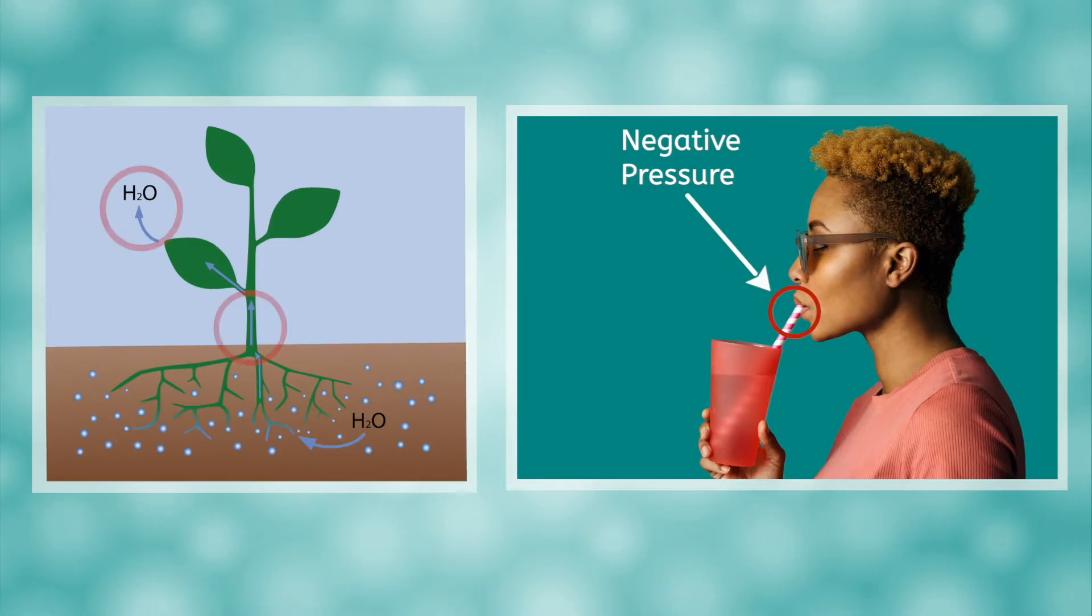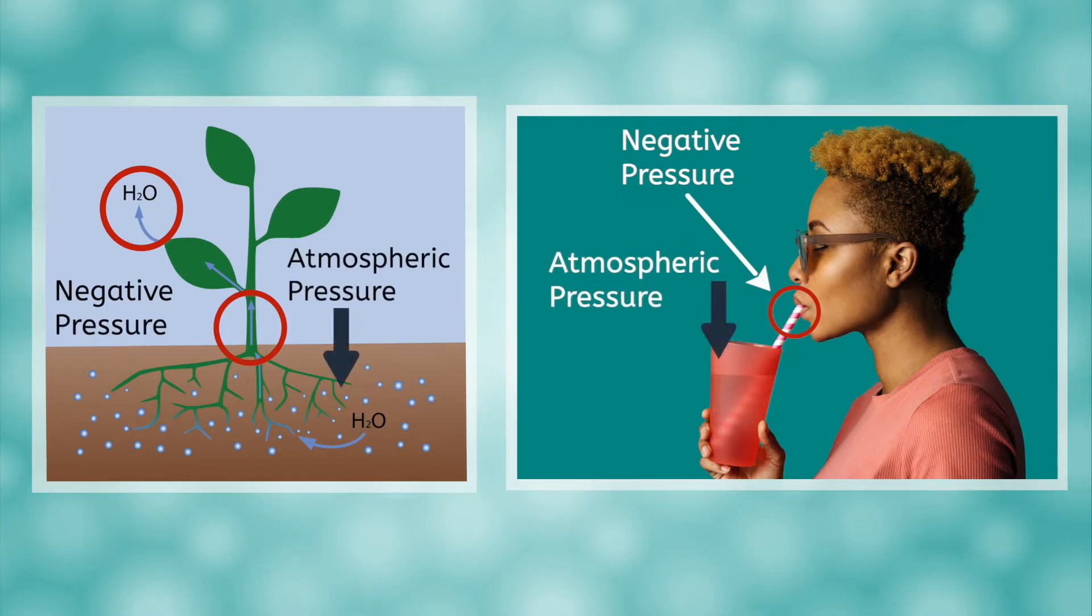It's not too different from the way you may drink your favorite soda through a straw. Sucking on the straw creates a negative pressure in the top of the straw, just like water evaporating from the leaves at the top of the tree creates a negative pressure in the xylem tubes. The atmospheric pressure pushing down on the liquid outside pushes it right up the xylem tubes, just like soda is pushed up through your straw.